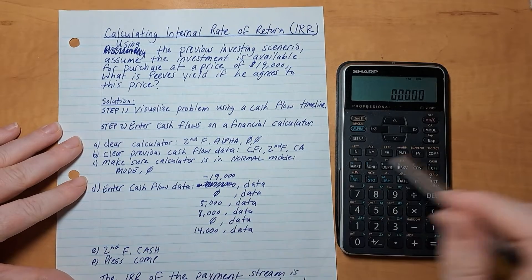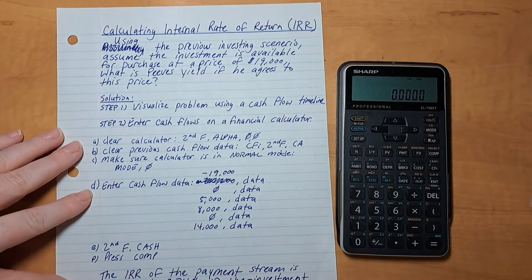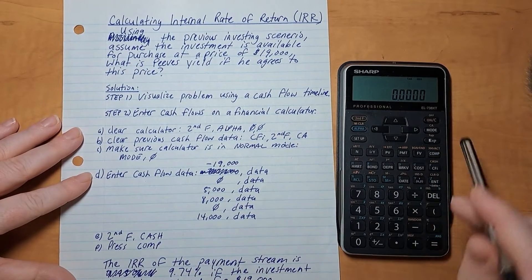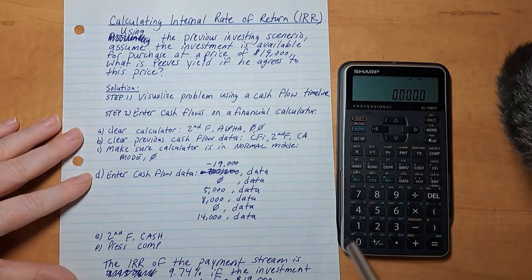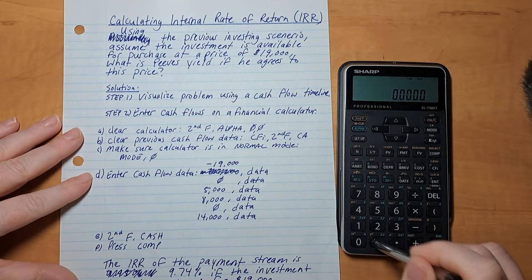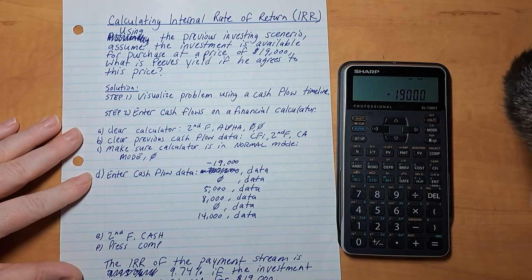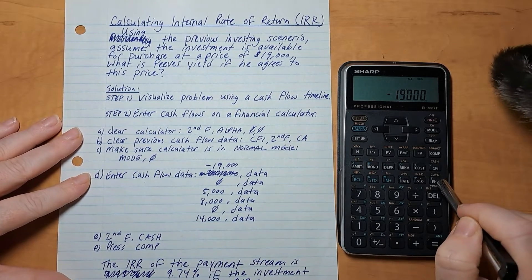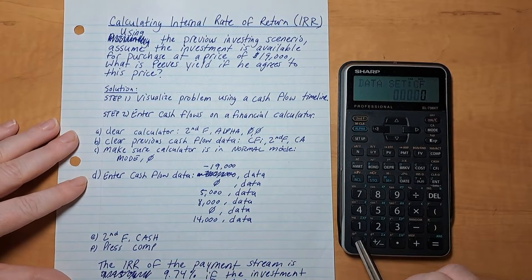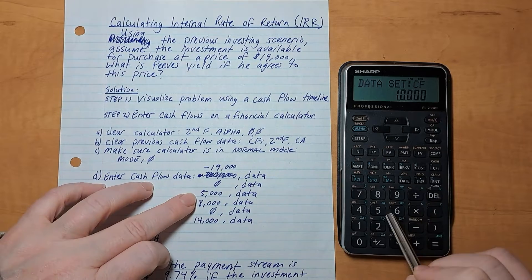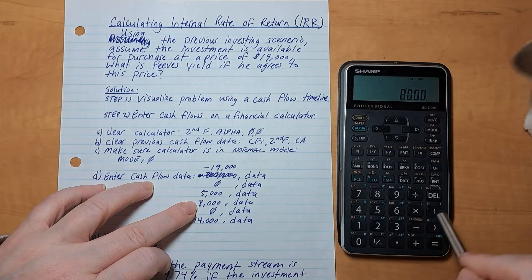We can do mode and zero, and that sets it into the normal mode. So let's enter the cash flow data. The cash flow data is minus 19,000. And then we hit this data button, it's also the enter button. We have zero data, 5,000 data, 8,000 data.